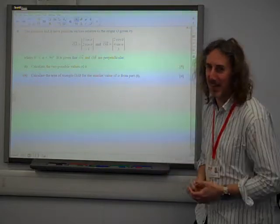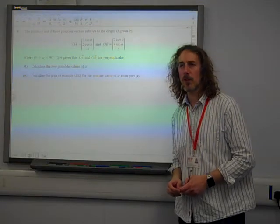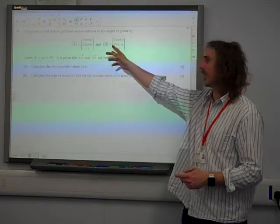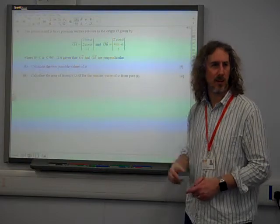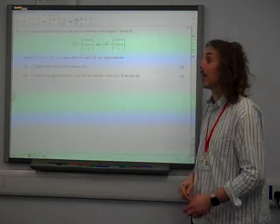Right, question A. The points A and B have position vectors given by that. This was really horrible to throw in all this trig stuff into this question, wasn't it? It's given that OA and OB are perpendicular.